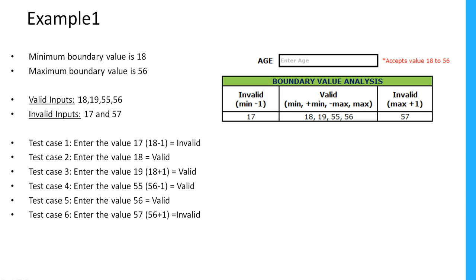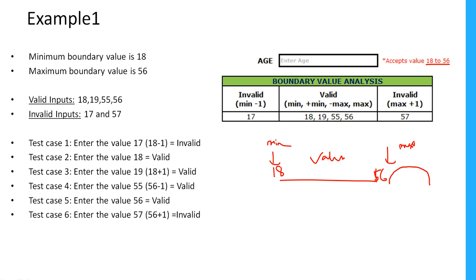The valid boundaries are 18, 19, 55, and 56. If you see this particular table, the minimum range is 18 and the maximum is 56. Normally, if I don't use this technique, I have to test with all the numbers between 18 to 56 as valid inputs, and also test values above 56 and below 18 as invalid. That's a lot of effort.